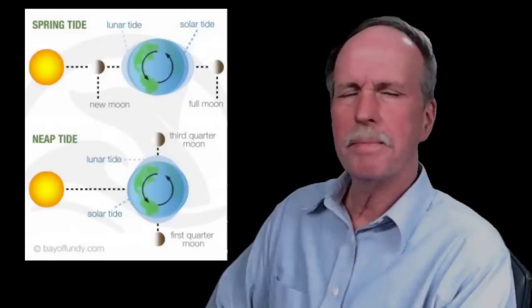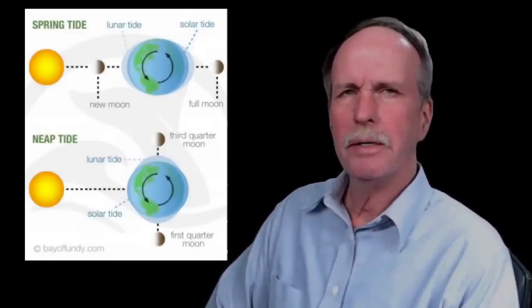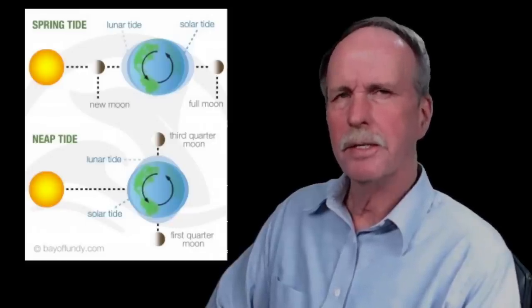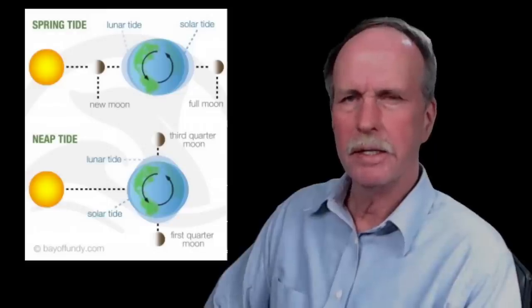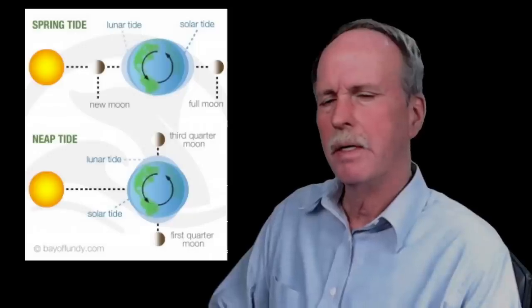Now, there are two types of tides that deserve special mention. When the Sun and the Moon are in alignment with the Earth, we get what's called spring tides. The solar tide and the lunar tide are additive to each other and we get really big tides.